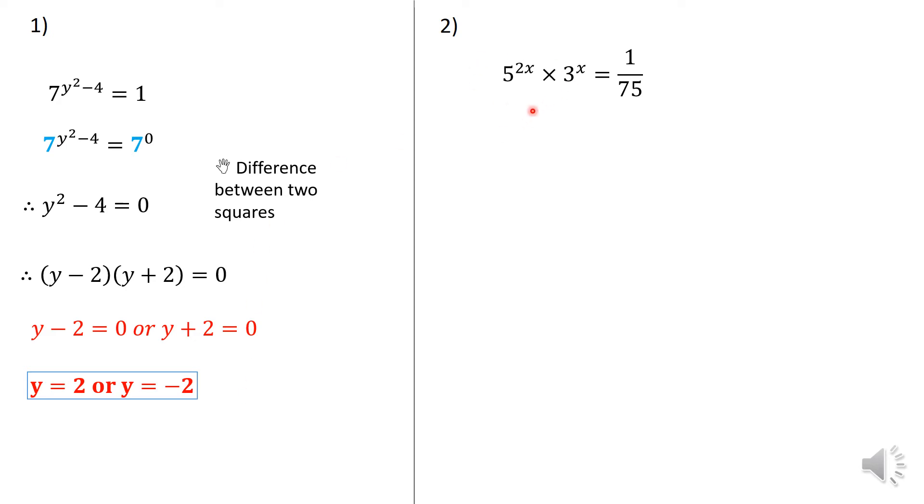The second one here, a little bit tricky, but not so much so. So what I do here is you see that 5^(2x) can be written as (5²)^x × 3^x = 75^(-1). Obviously here, I'm using the negative index rule, or property. So 5² is 25. So 25^x × 3^x = 75^(-1).